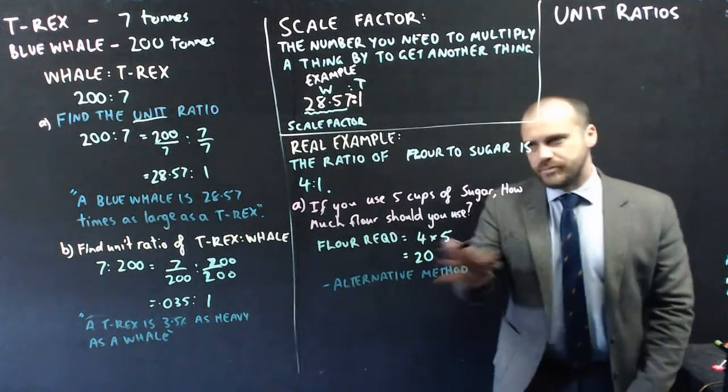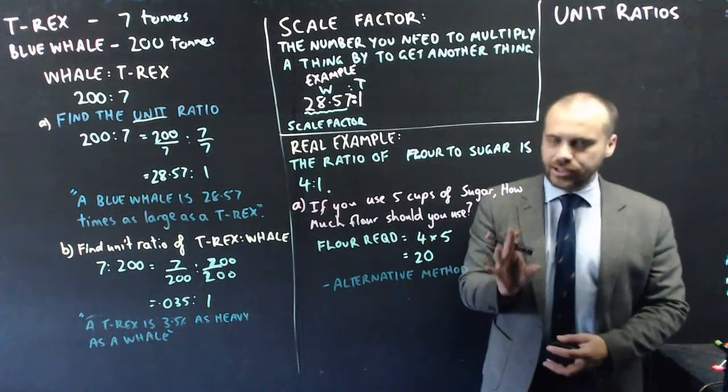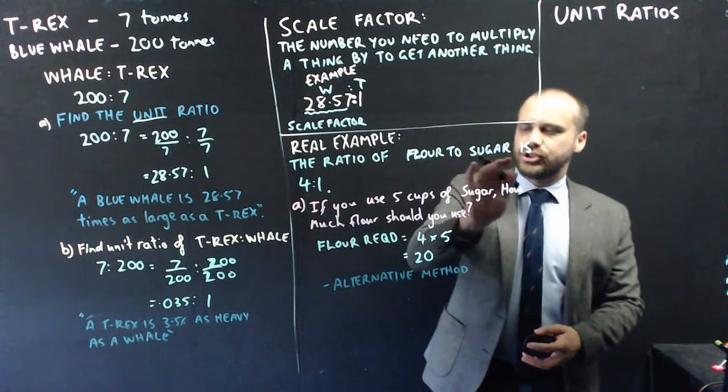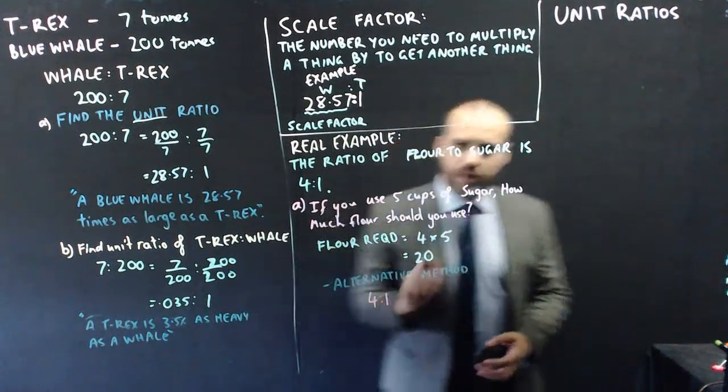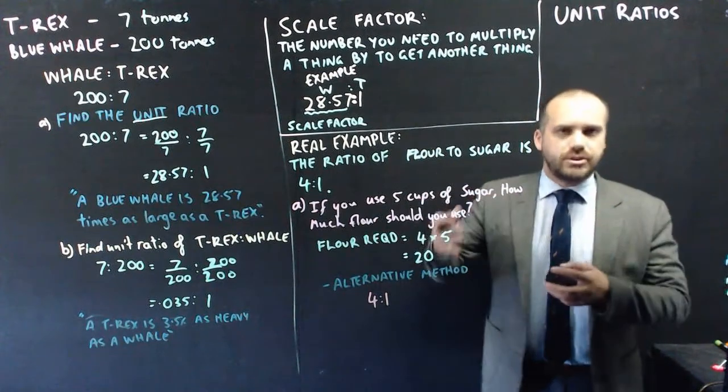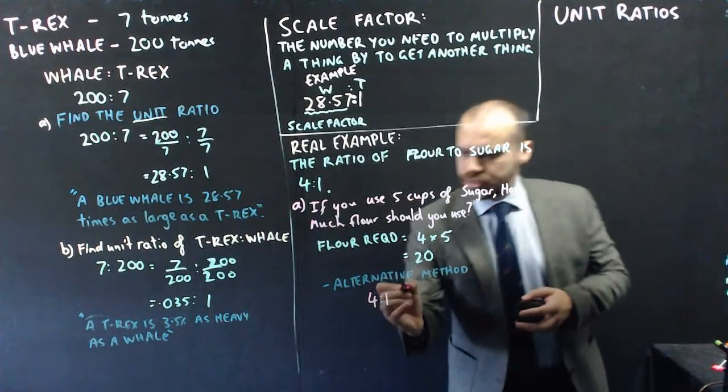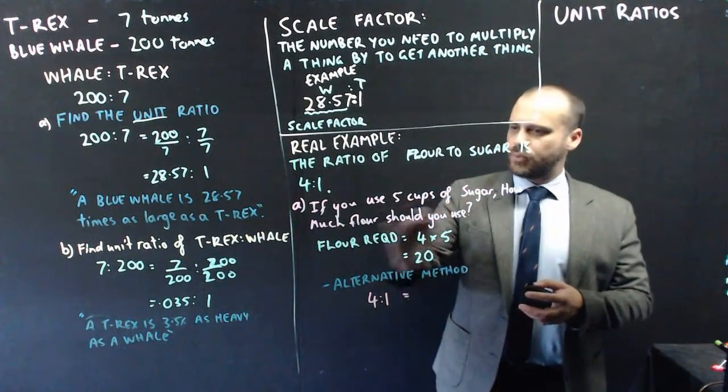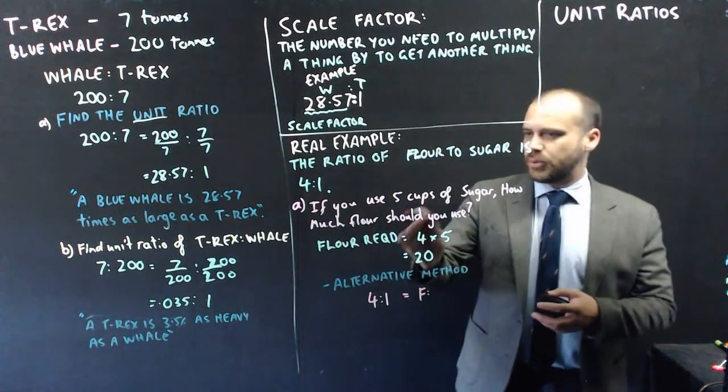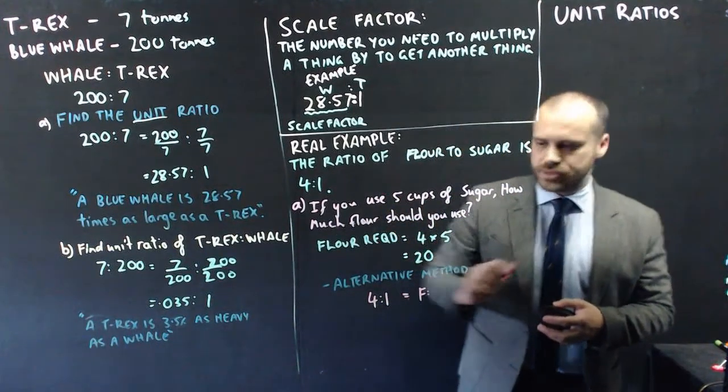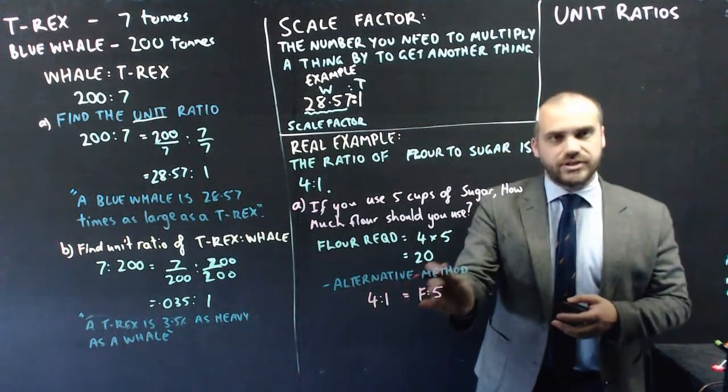Now, there is an alternative method to solving this exact same question that I think I like a little bit better. We know that the ratio of flour to sugar is 4 to 1. But we're making a bigger recipe than 4 cups to 1 cup. We're making a recipe that is, we don't know how much flour, so I'm just using the letter F here. But we do know we're using 5 cups of sugar.